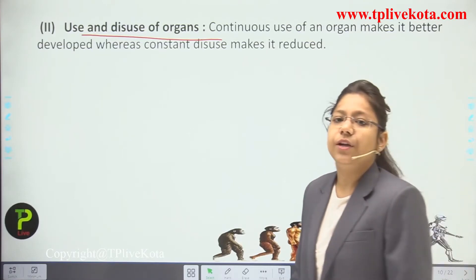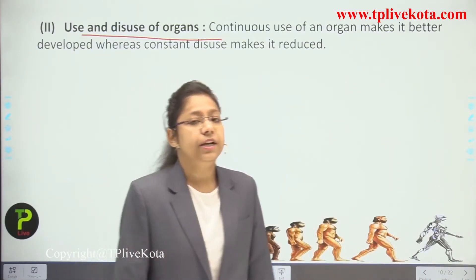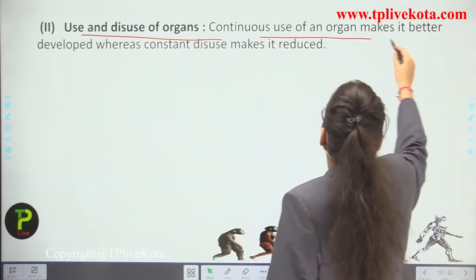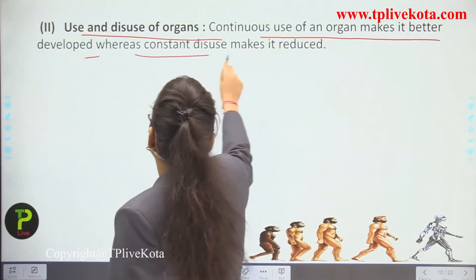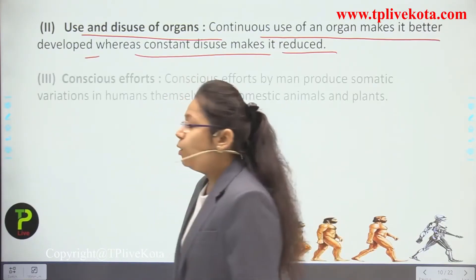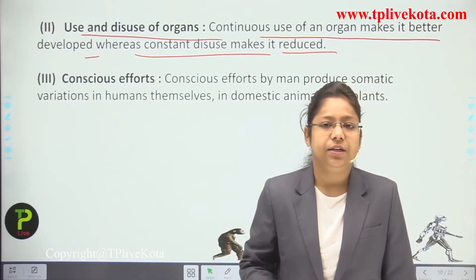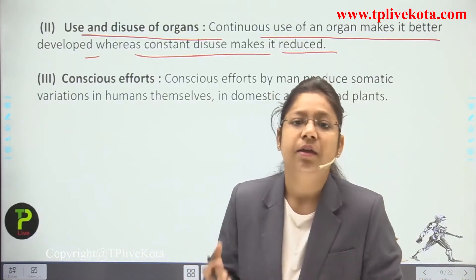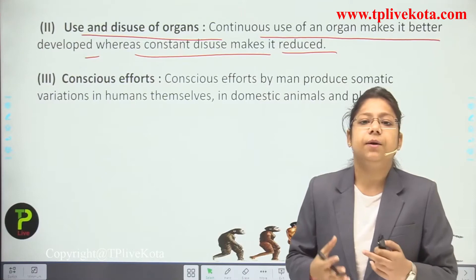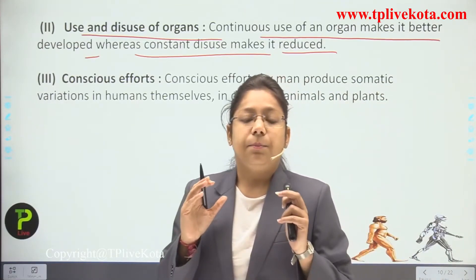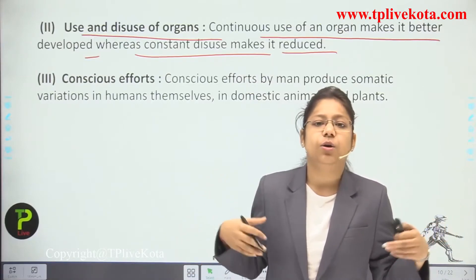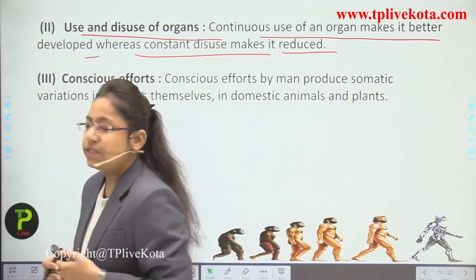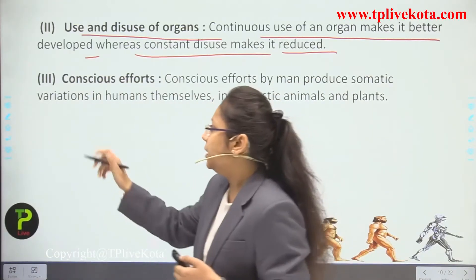Use and disuse of organs is very important. Continuous use of an organ makes it better developed, whereas constant disuse causes it to reduce. If a person continuously uses their forelimbs and hind limbs — walking, running, doing physical work — the organs develop completely. But if a person does not do physical work, those organs will not develop properly. This is also a reason for somatic variation.